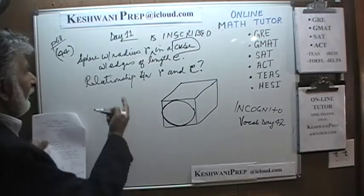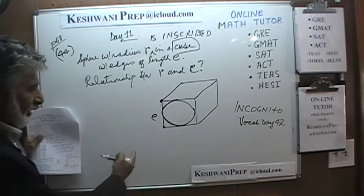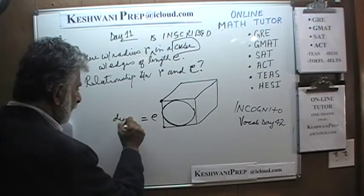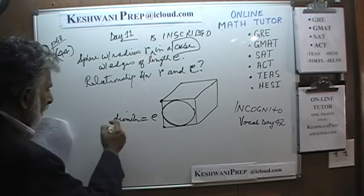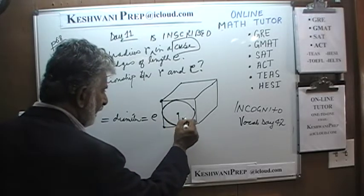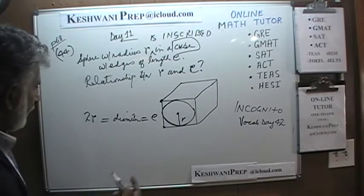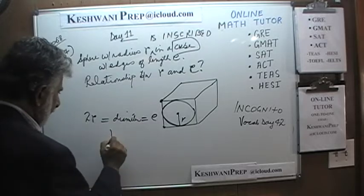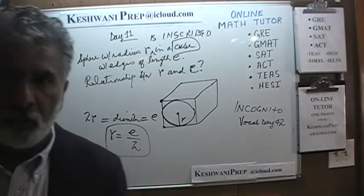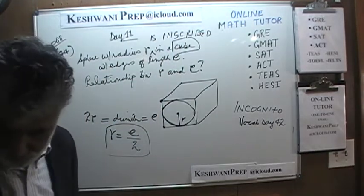The diameter equals e, and we know diameter is two times the radius. So e equals 2r, which means r equals e over 2, or half of e. The radius is half the diameter — nothing to it.